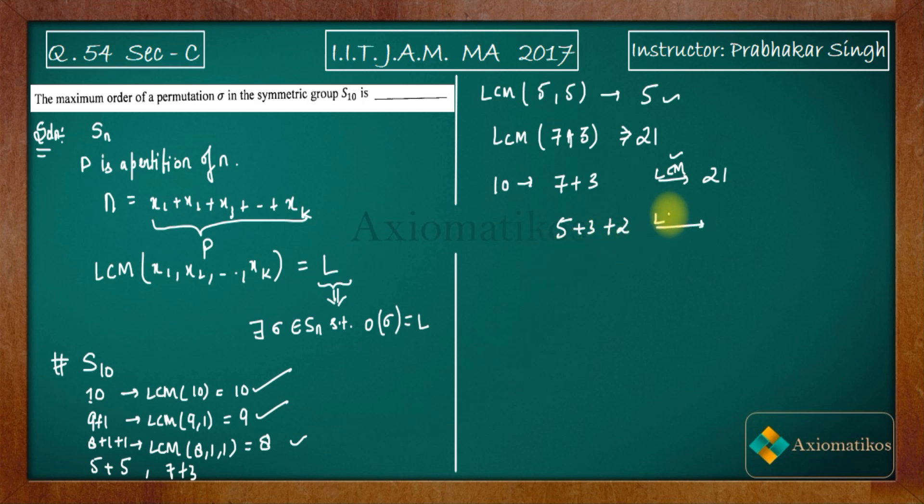Now you can think of other partitions also. If you think of other partitions, you will get that there is no partition whose LCM is going to be bigger than 30. That means there is an element of order 30, and it is the biggest order which will lie inside S_10.